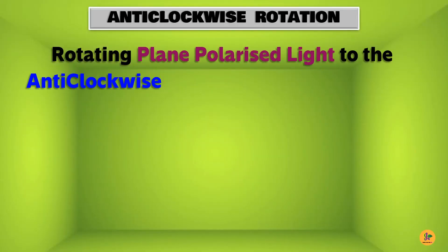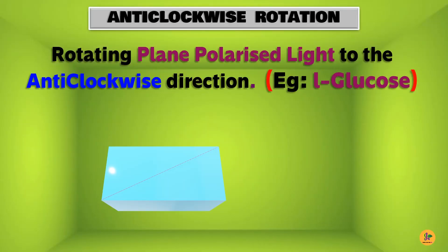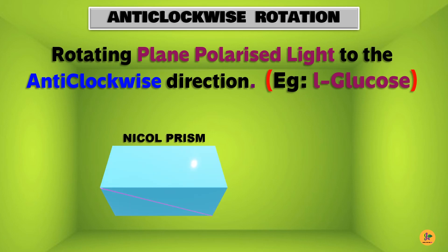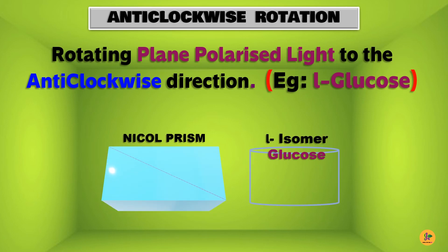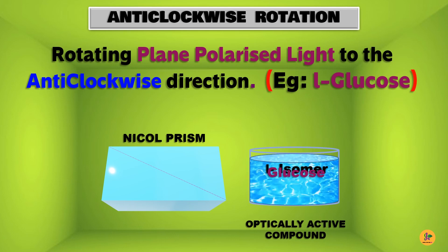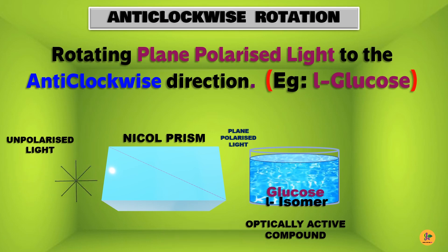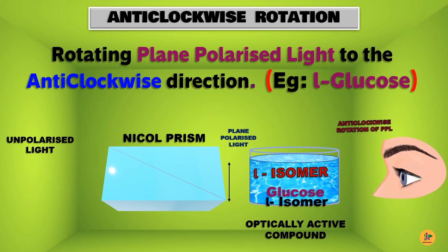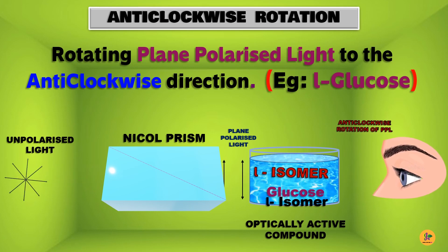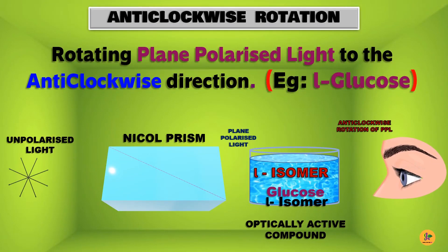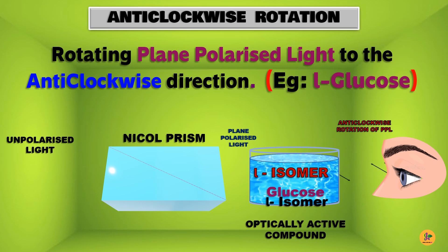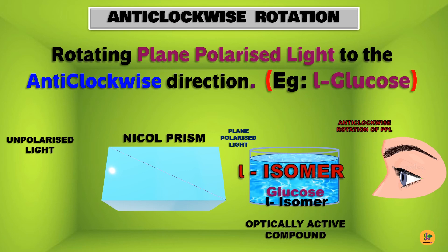The other isomer is the laevo isomer, the L form, which can rotate the light anti-clockwise. Let us take L-glucose as an example. Unpolarized light after passing through the nicol prism gets converted into plane polarized light, which is then allowed to pass through the L-isomer of glucose, and that rotates the light anti-clockwise. So the two isomers are: dextro rotating and laevo rotating.